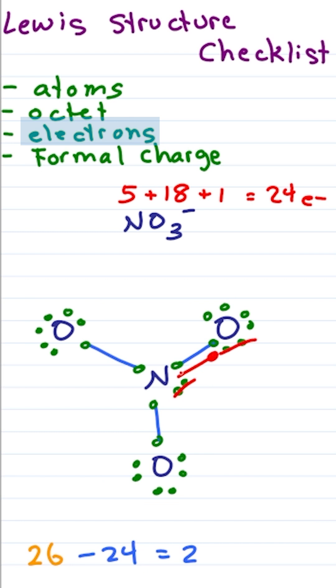In this case, I'll cancel a lone pair from nitrogen, oxygen, put a pi bond between them, and a recount gives me 24.